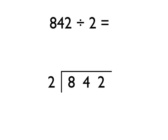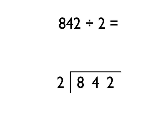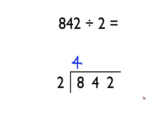Looking at another example now. We're going to do 842 divided by 2. We lay out our workings, as you can see down here, with the 2 to the left of the bus shelter and the 842 underneath it. Next thing we do, we ask ourselves: how many times does 2 go into this 8? Well, it goes in 4 times — 4 times 2 is 8 — so we put the 4 up there.